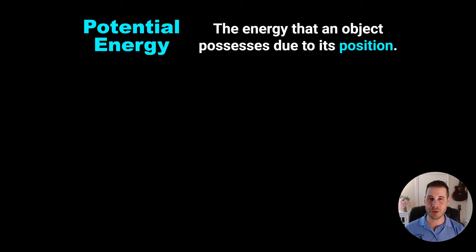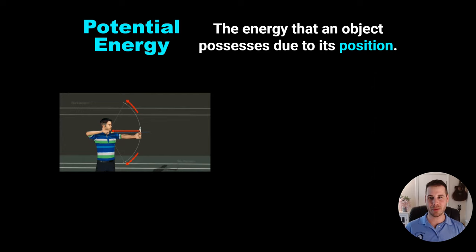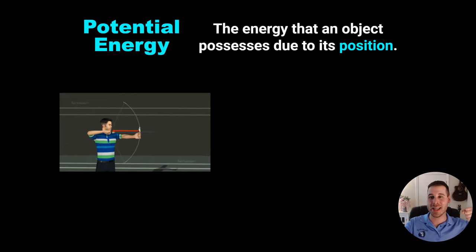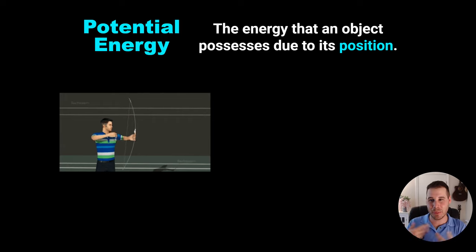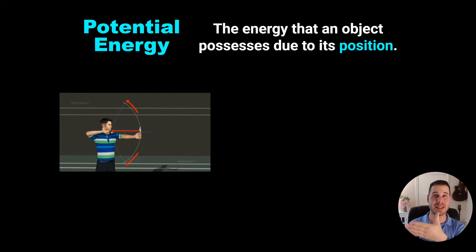Potential energy is the energy that an object possesses due to its position. Here's an example: in archery, when someone pulls back the string of a bow, they're transferring the chemical energy of their body into potential energy in the bow. That arrow has the potential to move but hasn't started yet. So potential energy is like stored energy — energy of an object that has not yet moved but probably will very soon. Then that potential energy is released in the form of kinetic energy.